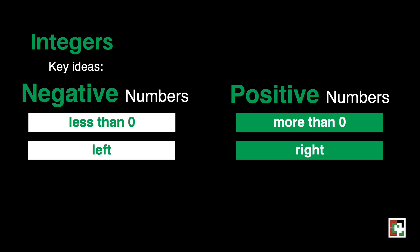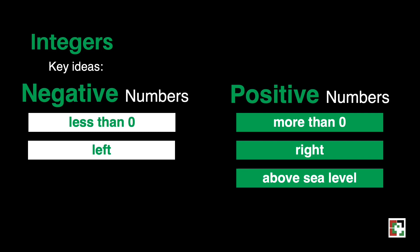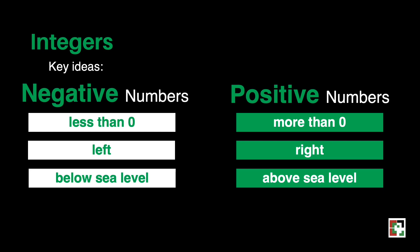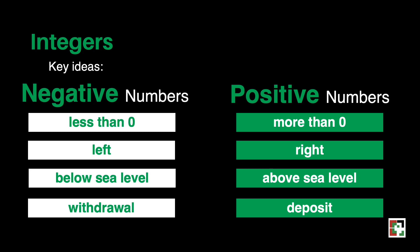If positive represents above sea level, then negative represents below sea level. If positive represents a deposit, then negative represents a withdrawal.